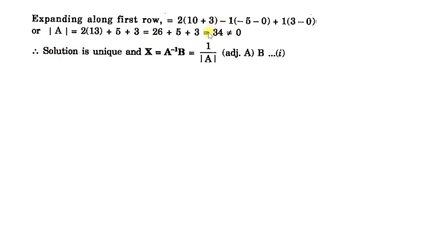So it means its inverse exists. We can find x, that is x equals A inverse B, where A inverse is adjoint A divided by determinant A. So now we have to find adjoint A, and adjoint A is the transpose of the cofactor matrix.